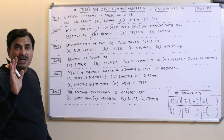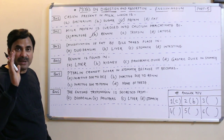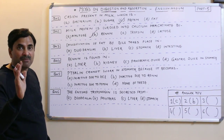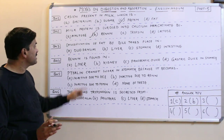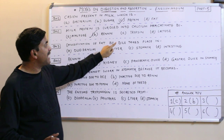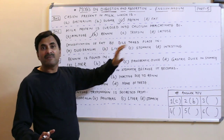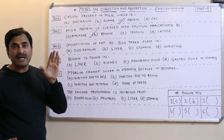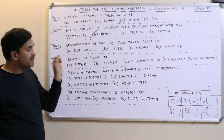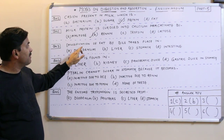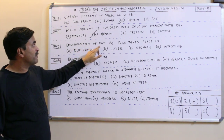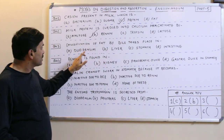First, what is emulsification? Conversion of big droplets of fats into smaller droplets is called emulsification. The question is: emulsification of fat by bile takes place in which location? Bile juice consists of bile salts, and those bile salts are responsible for the emulsification of fat.